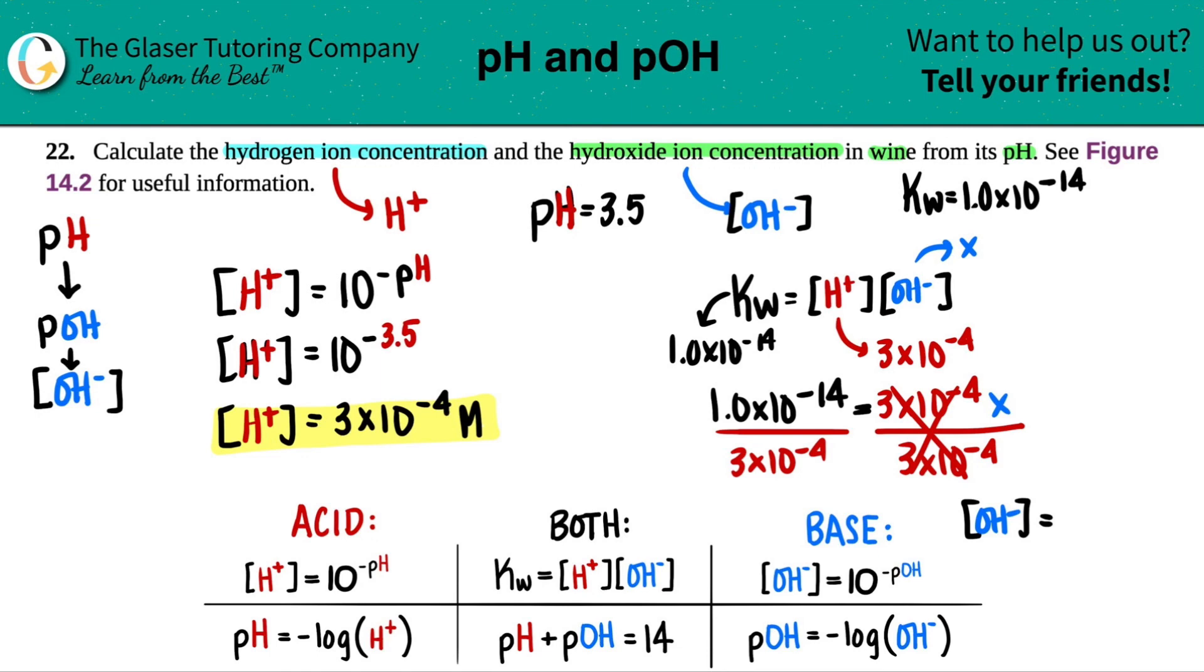We're only allowed one sig fig. So it's 3 times 10 to the negative 11th. And that's molarity.